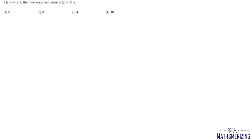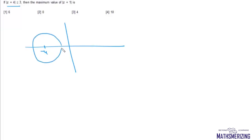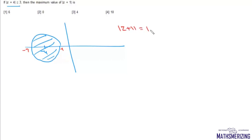Next question: if mod of Z + 4 is less than or equal to 3, find the maximum value of mod(Z + 1). This is a circle with center at -4 and radius 3. It represents all points on or inside this circle, with boundary points at -7 and -1. mod(Z + 1) is the distance between Z and -1. The point farthest from -1 gives maximum value equal to the diameter, which is 6. The minimum value is 0.